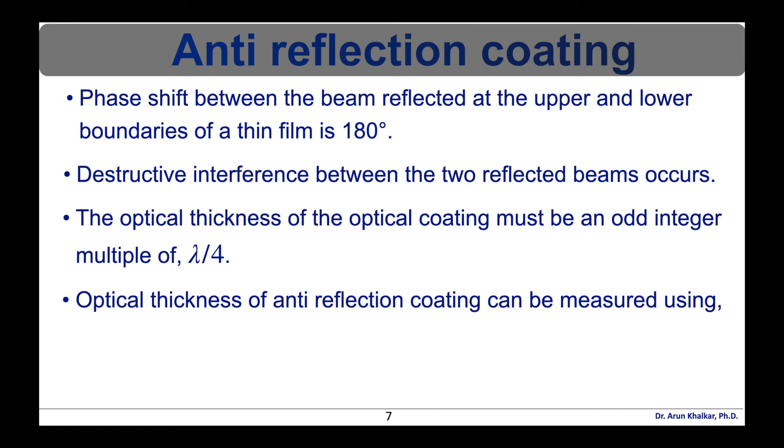The refractive index of the thin film that is NF needed for complete cancellation of reflected beams can be found by using the refractive indices of the incident medium that is N0 and the substrate that is NS. Magnesium difluoride is often used since this is a hard wearing and can be easily applied to substrate even though its index is higher than the desirable that is n is equal to 1.38.